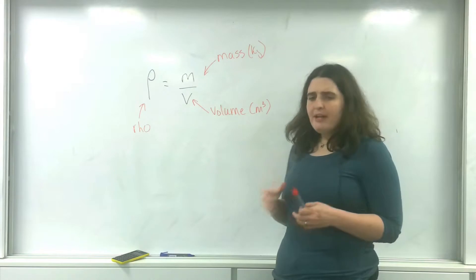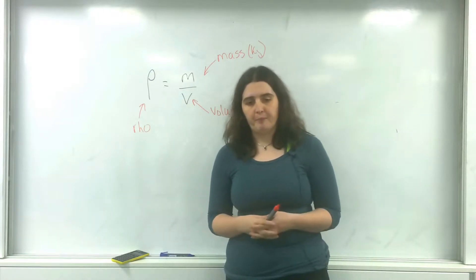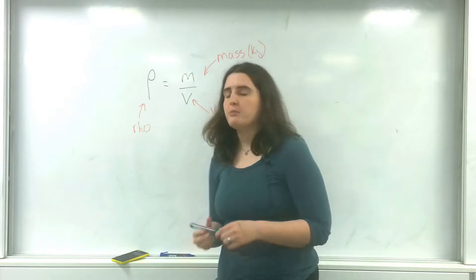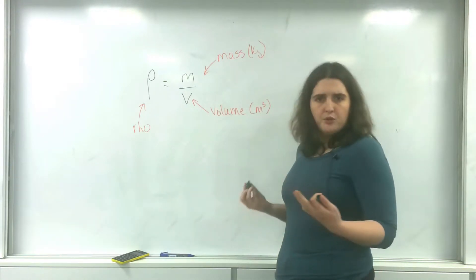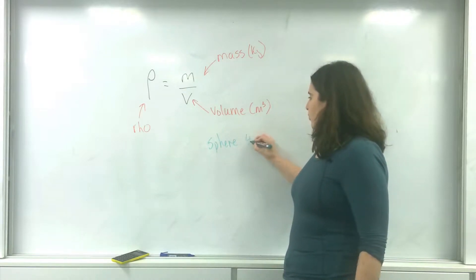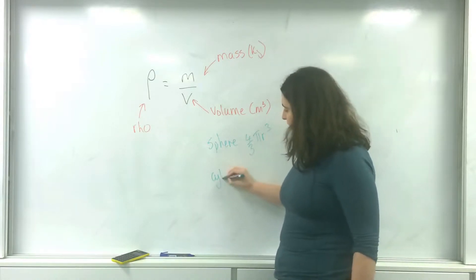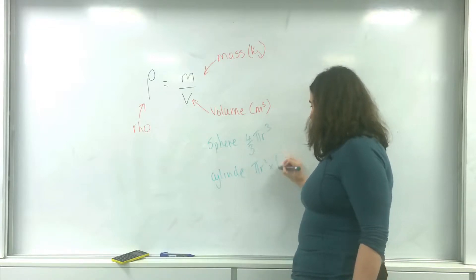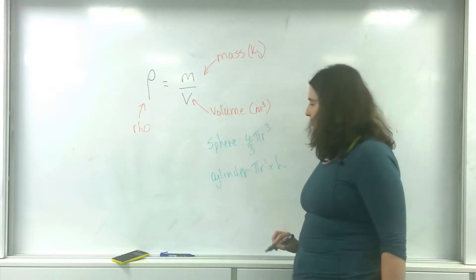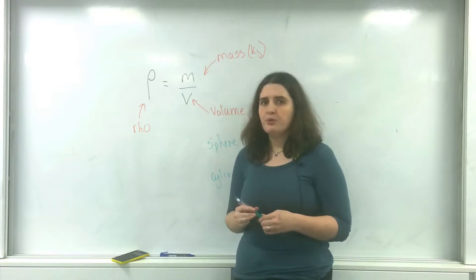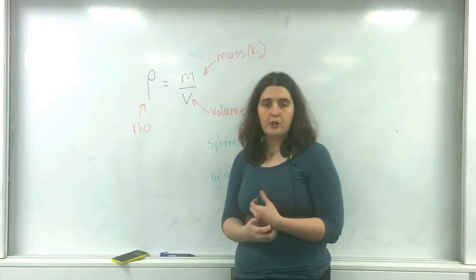A really important thing about volumes is to remember the shapes of them. On your data sheet, you are given quite a few volume formulas. For spheres, it's four-thirds pi r cubed. For a cylinder, pi r squared times the height. Of course, you'll be given cuboids, etc. These are in the front of your data sheet, so it's important that you are aware of the volumes on there.